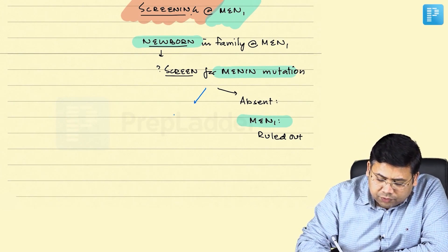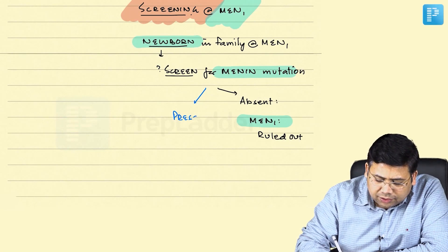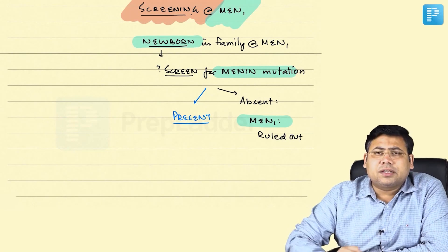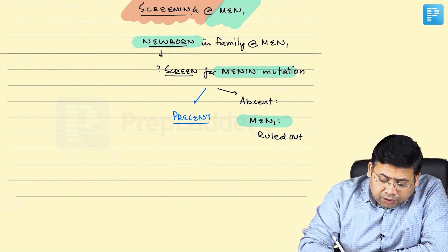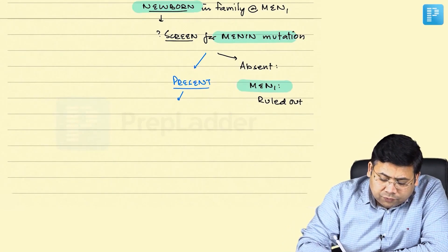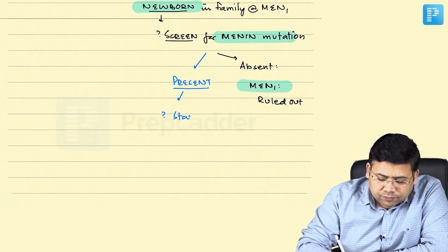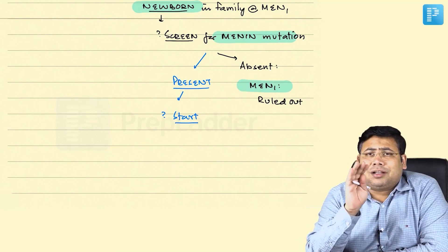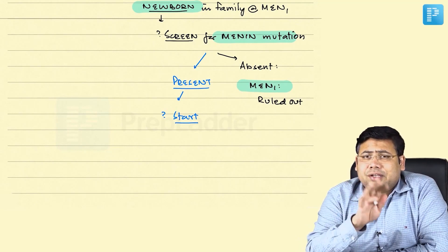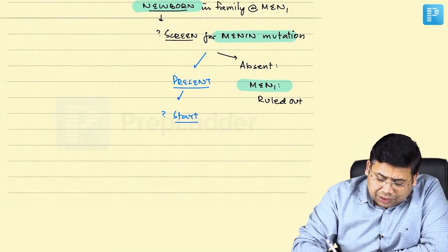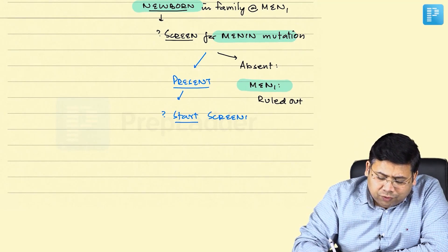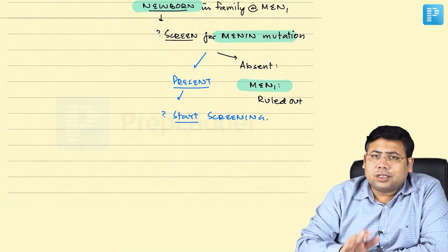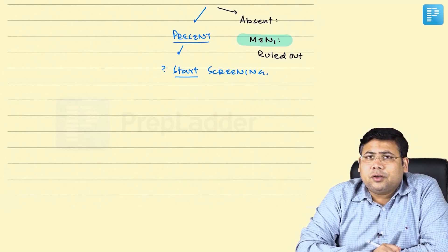If the menin mutation is present, then you start the screening protocol — and the concept is straightforward because we know the three target endocrine organs. So you start screening for those three target endocrine organs.